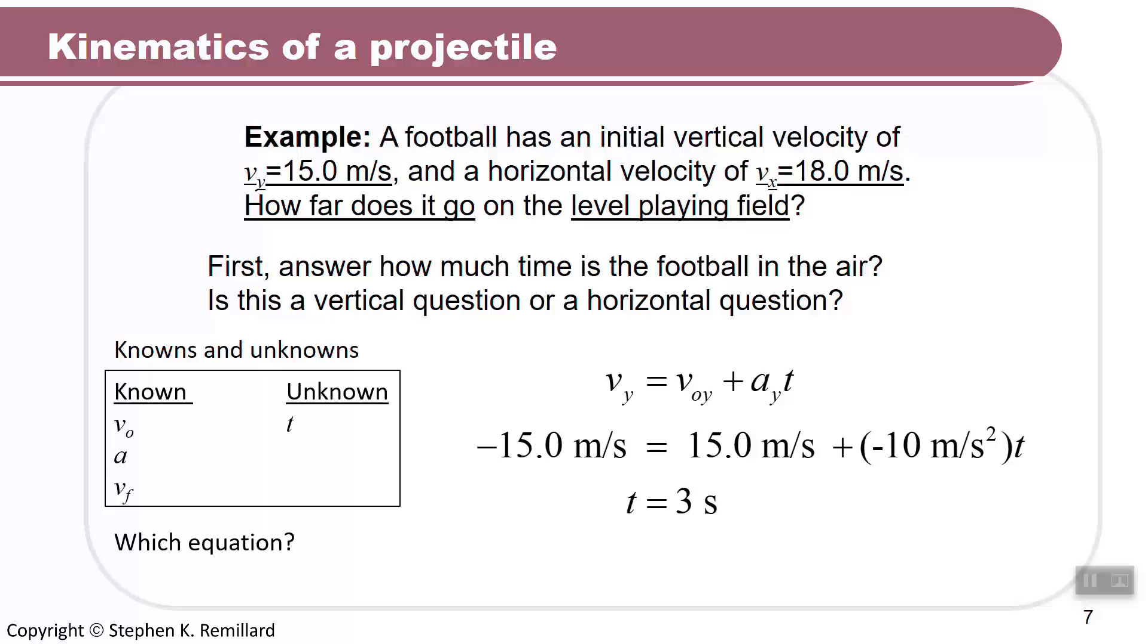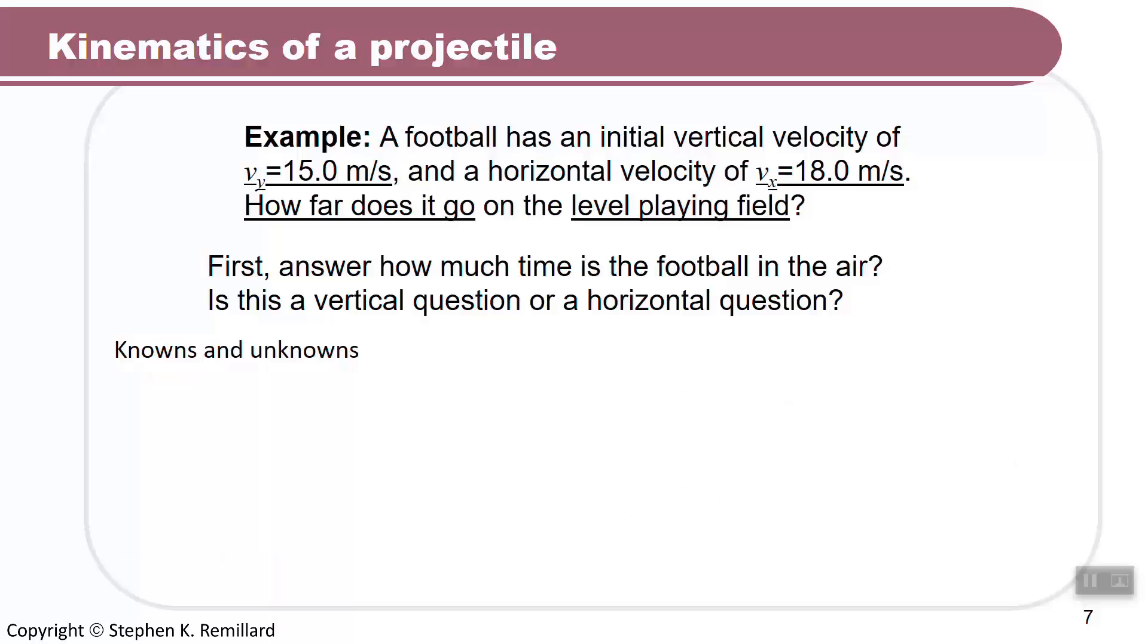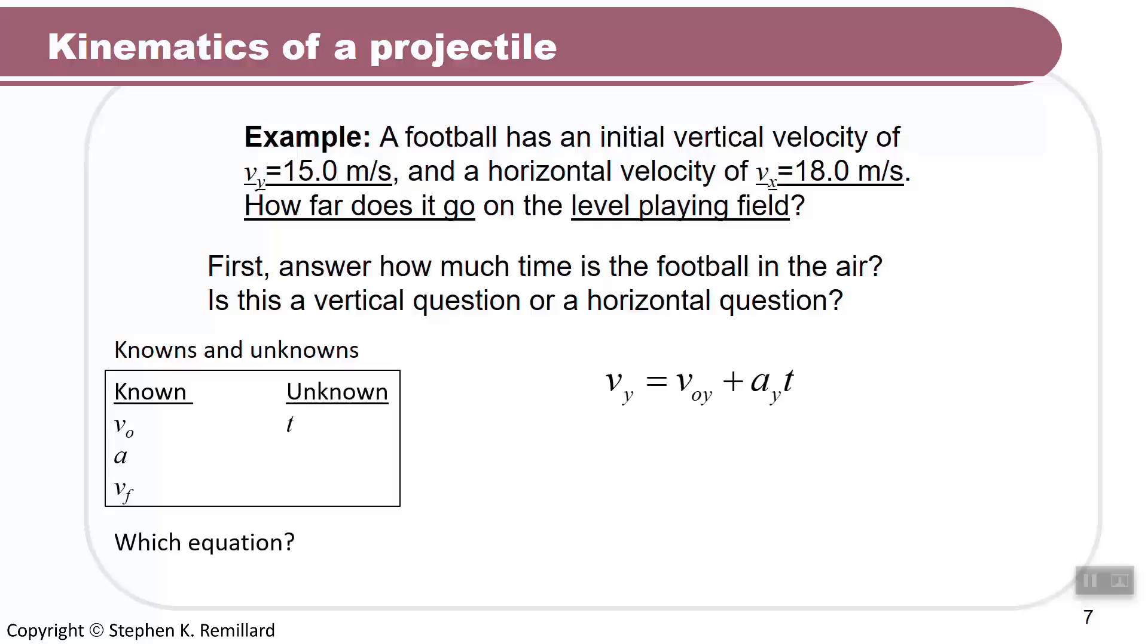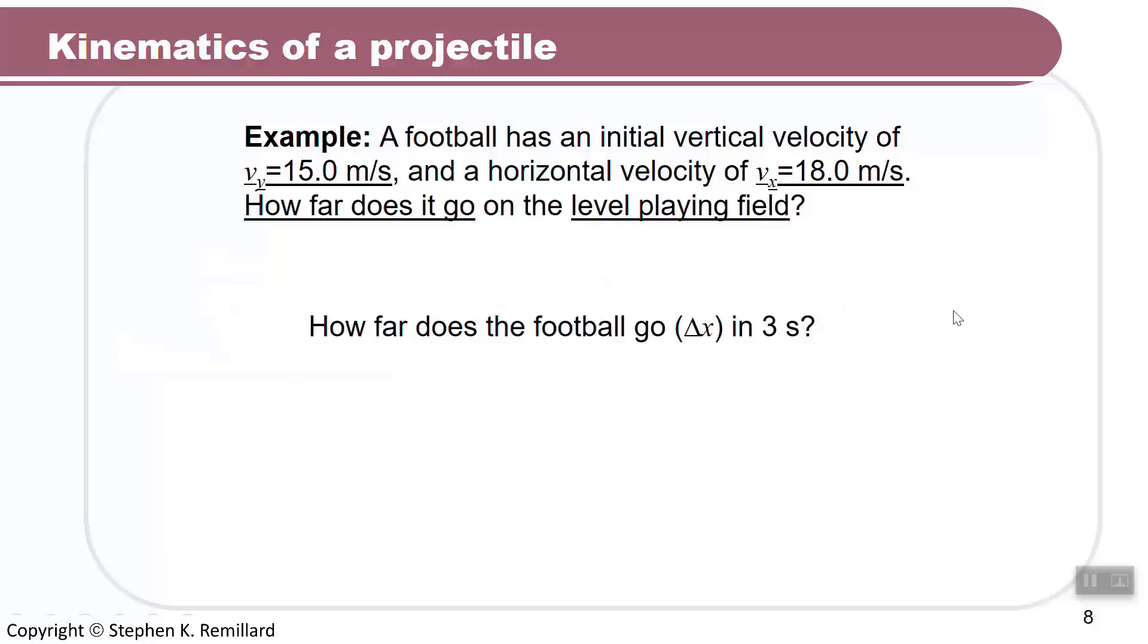That wasn't the question. The question was how far does it go? But the problem was we couldn't answer how far it goes because the horizontal world has no knowledge about when that football has to return to the ground. So as far as the horizontal world is aware, it's going to keep going until the vertical world says you've got to stop. So now we know that after three seconds it has to stop. So let's answer the question how far does it go now? Given that it's going to be back at the ground in three seconds, you have an initial x velocity of 18 meters per second. Well, it's always 18 meters per second in the x direction. So we just have to multiply that 18 by 3 seconds. 18 meters per second times 3 seconds gives you 54 meters.